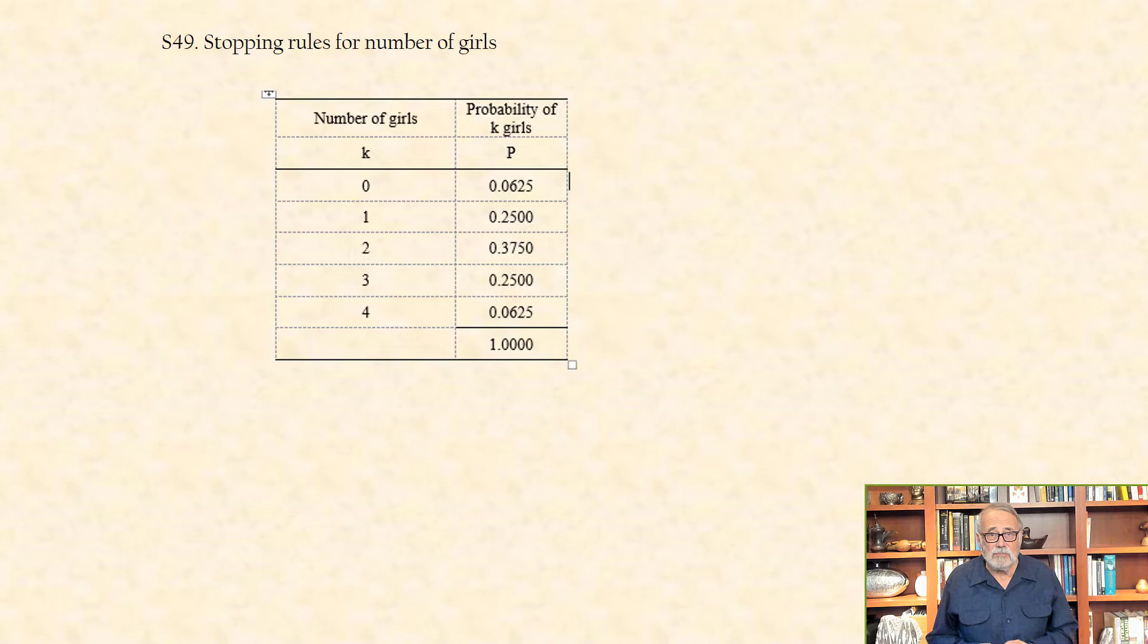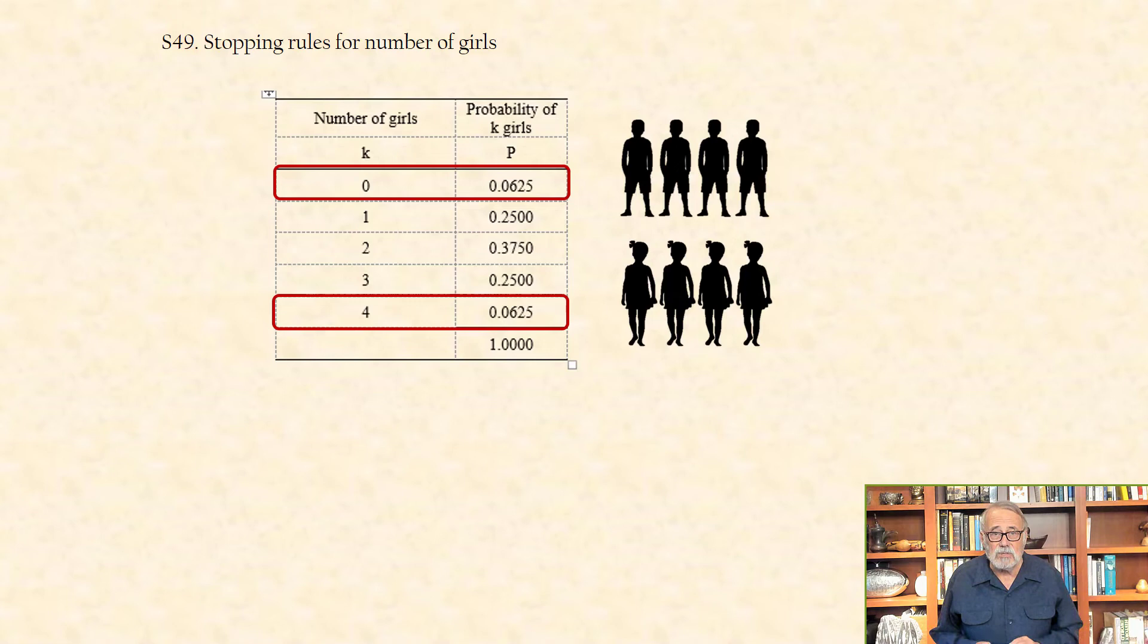We see that the probability of having either no girls or all girls is about 1 out of 17, or 0.0625.